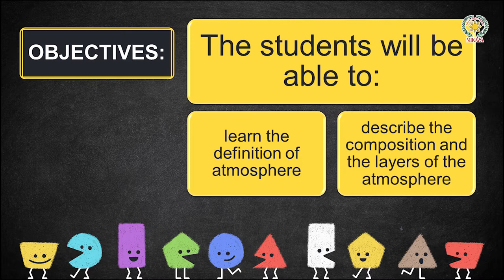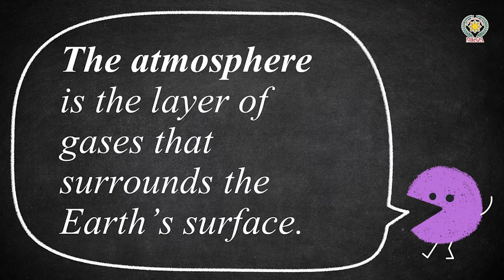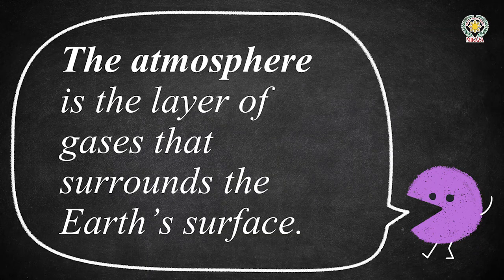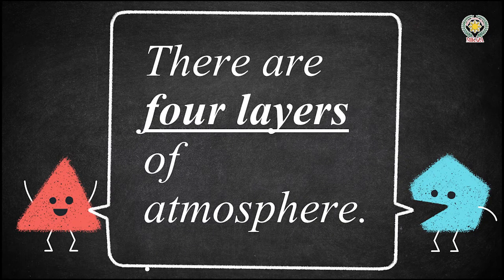Let's start. The atmosphere is the layer of gases that surrounds the Earth's surface. Now, how many layers of atmosphere are there? Yes, there are four layers of atmosphere.